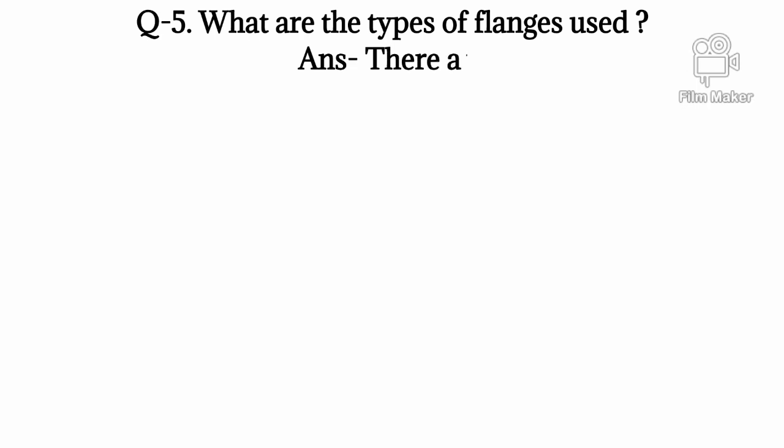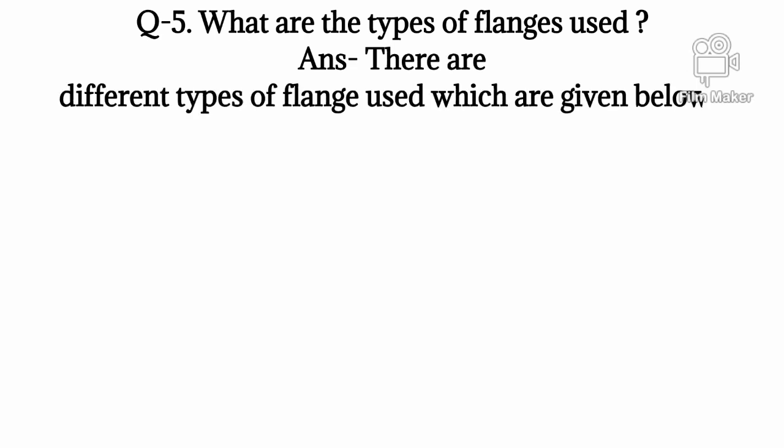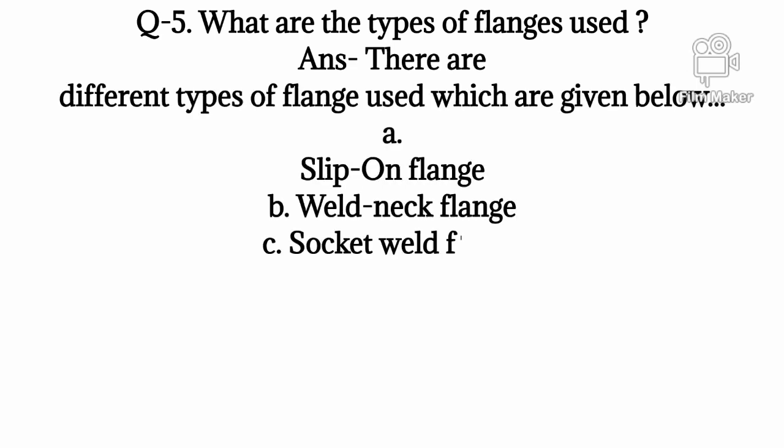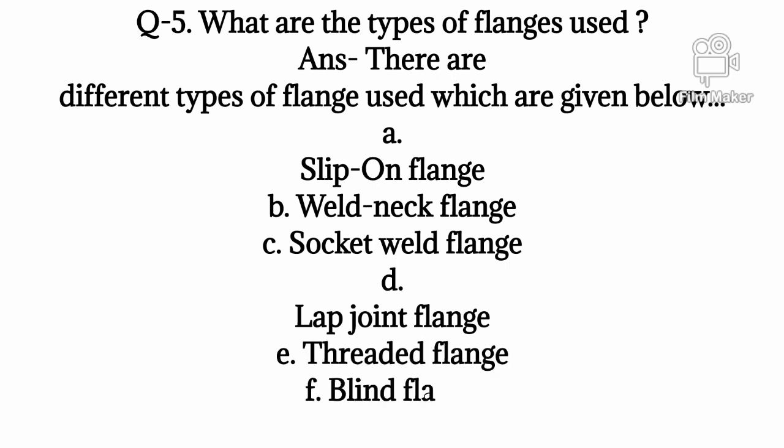Q5: What are the types of flanges used? Answer: There are different types of flange used which are given below. A: Slip on Flange, B: Weld Neck Flange, C: Socket Weld Flange, D: Lap Joint Flange, E: Threaded Flange, F: Blind Flange.